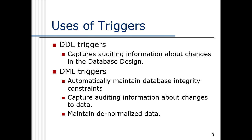Another use is for denormalized data. If information is required with high frequency, running a big query to find the value every time isn't efficient, so you might store it. If you access that data more than you recalculate it, you store that information. The trouble is if people go behind your back and don't use your procedure — how do you guarantee the information gets updated? That's another possible use of a trigger, because it happens automatically in response to those data manipulation events.